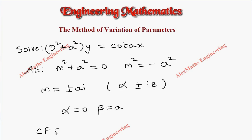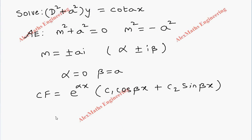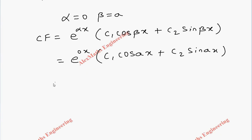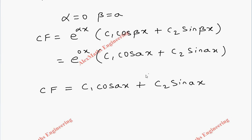This is of the form alpha plus or minus i beta, where alpha is zero and beta is small a. Using this we can write the complementary function. The formula is e to the power alpha x into c1 cos(beta x) plus c2 sin(beta x). Substituting alpha as 0, we get e to the power 0x into c1 cos(ax) plus c2 sin(ax). Since e to the 0 is 1, the complementary function is c1 cos(ax) plus c2 sin(ax).